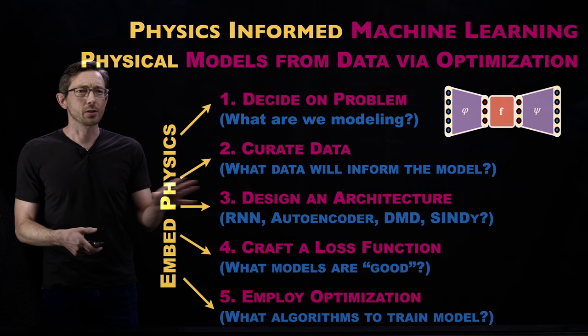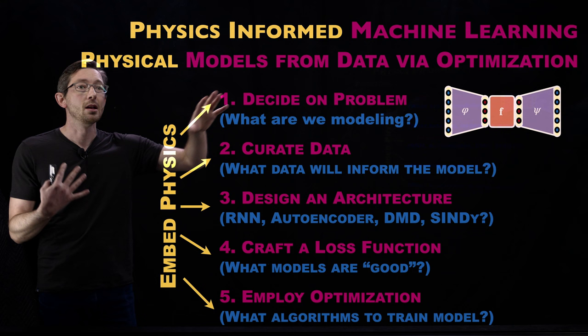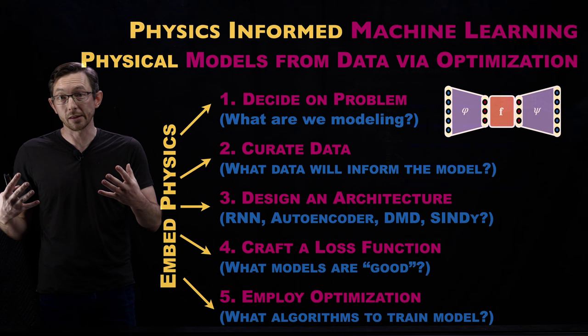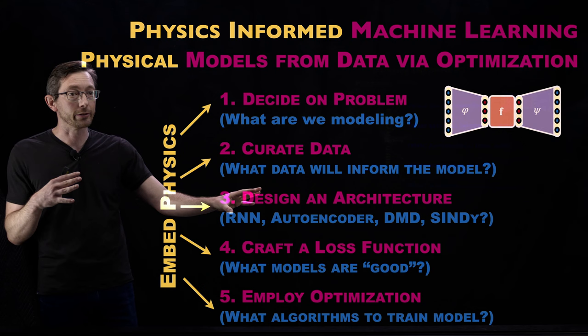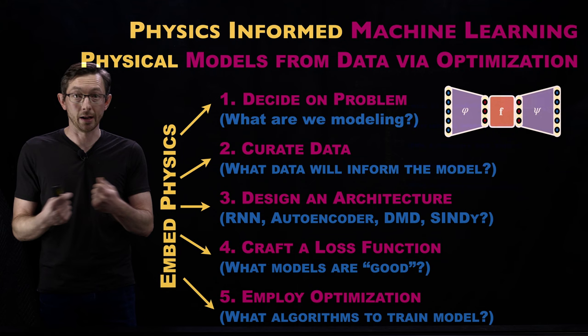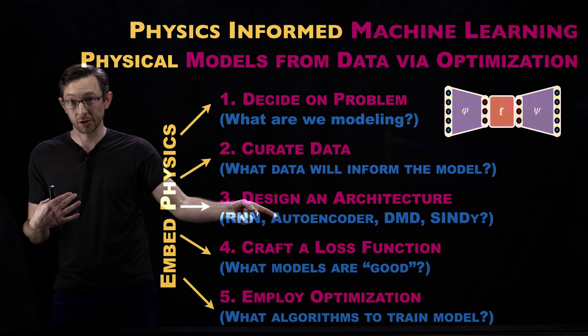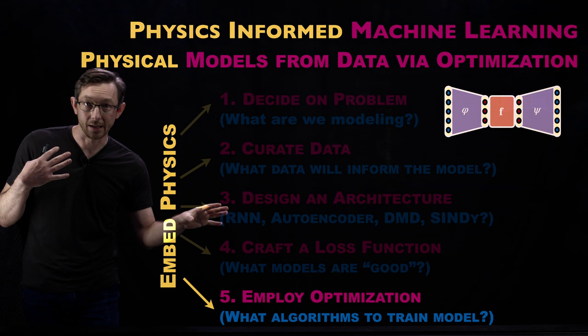These stages are all pretty tightly coupled. Once you decide on what you're going to model and you've picked out some data to train that model, the next three stages are pretty tightly linked. You usually pick some kind of an architecture — a deep neural network, a generalized linear model, or others. Then you craft a loss function that tells you if your model is good or bad. And then the last stage is actually employing an optimization algorithm to tune the parameters of the architecture to minimize the loss function averaged over the data. We're talking about all the different opportunities to embed physics directly in this optimization step.